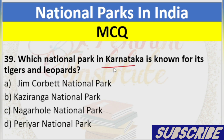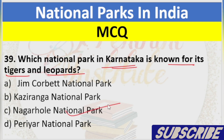Question 39: Which National Park in Karnataka is known for its tigers and leopards? A. Jim Corbett National Park, B. Kaziranga National Park, C. Nagarhole National Park, D. Periyar National Park. Answer: C. Nagarhole National Park.